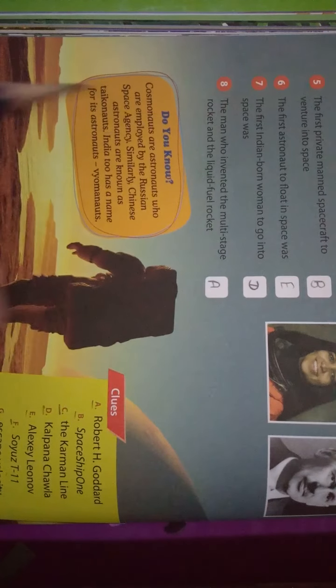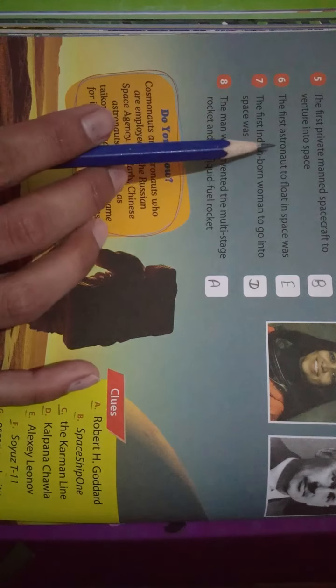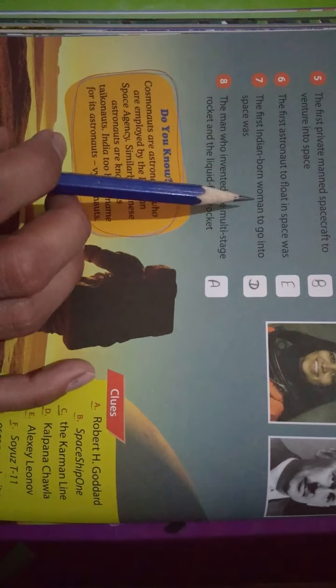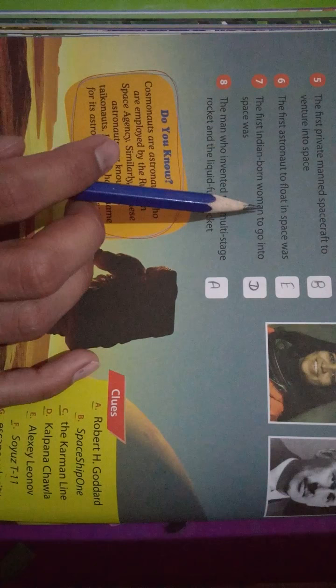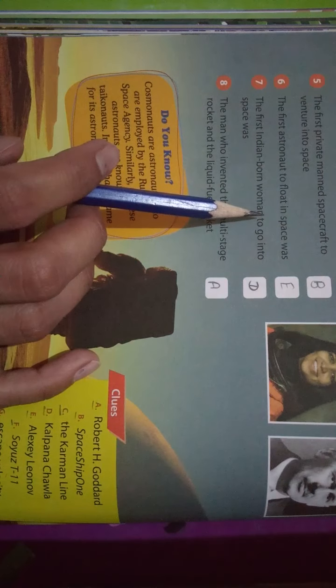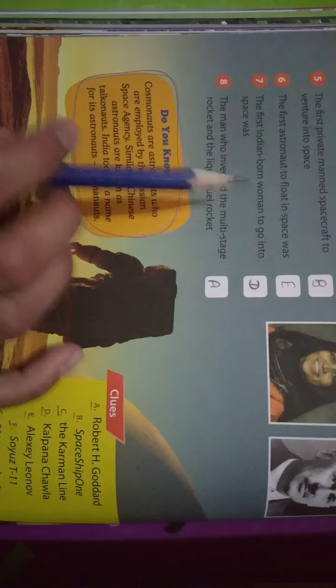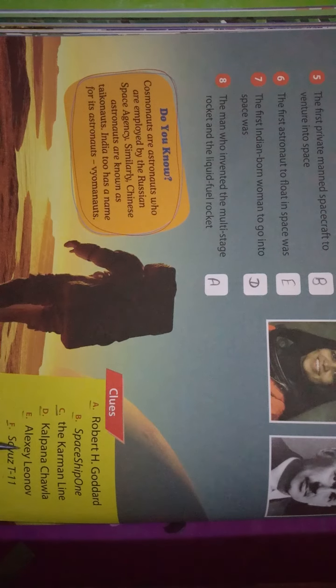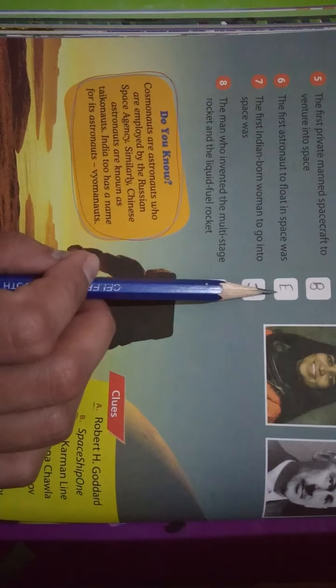Question number 6: The first astronaut to float in space. The first astronaut, the first space traveler. That was E. The answer is E: Alexei Leonov.